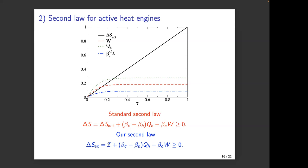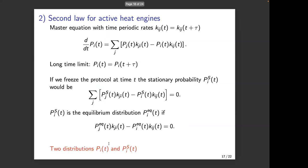Let me explain how we do that. If you have a master equation like we had in this course, but now the transition rates K_ij and K_ji depend on time and are periodic with period τ (the period of the engine), then if you look at the long-time solution of this master equation...